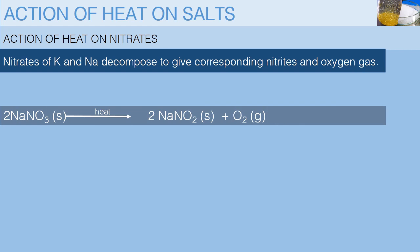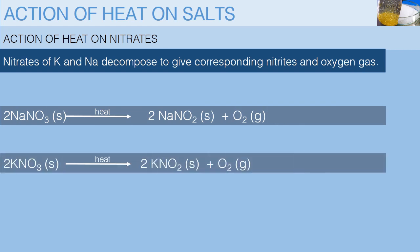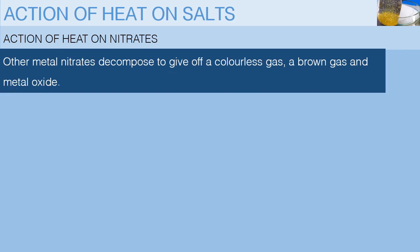Use these equations to consider these reactions. The nitrates of other metals that are in the middle of the reactivity series will give off a colorless gas, a brown gas, and a metal oxide.